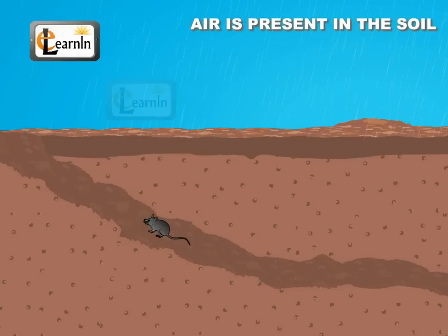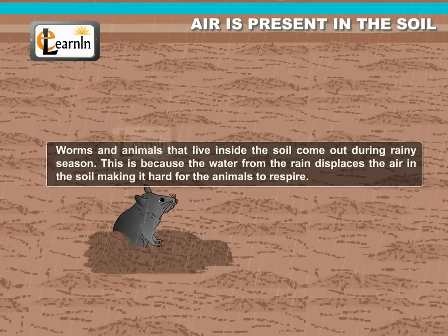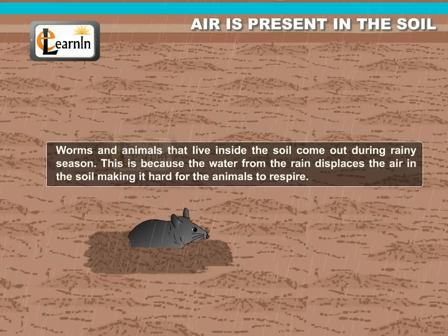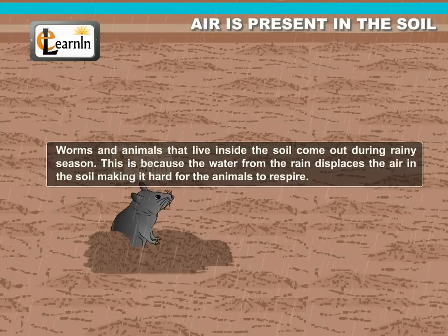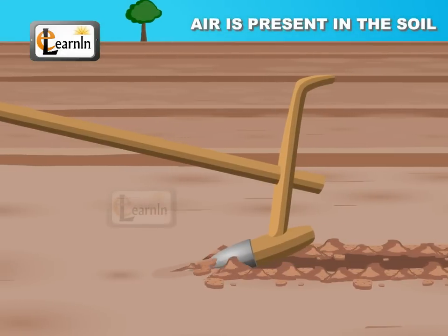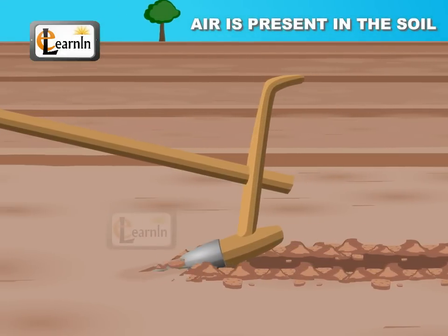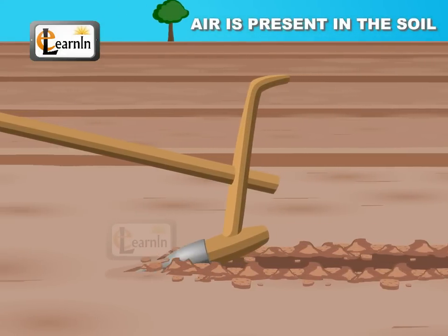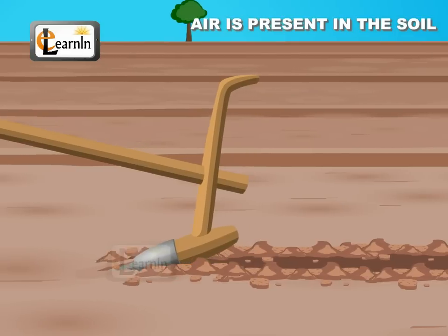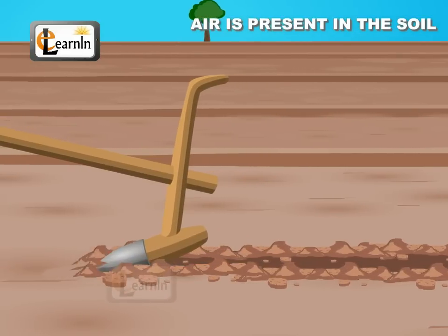This is because the water from the rain displaces the animals in the soil, making it hard for the animals to respire. Soil is thoroughly ploughed before the cultivation of crops so that there is always a steady flow of nutrients, water, and air.